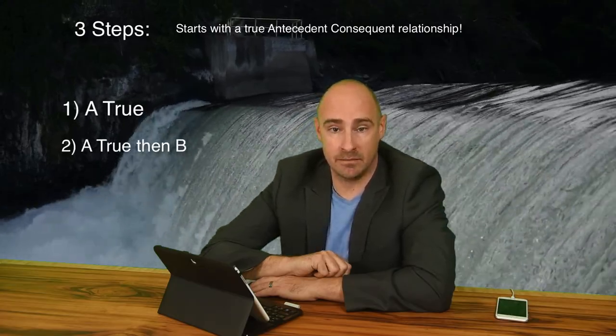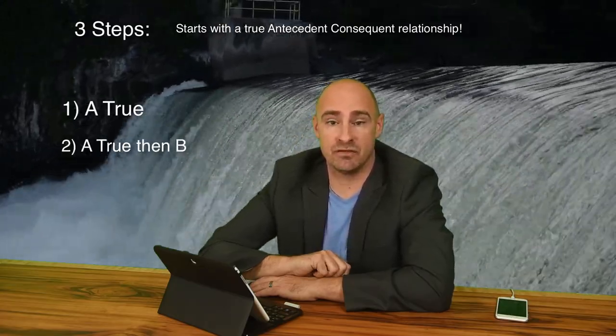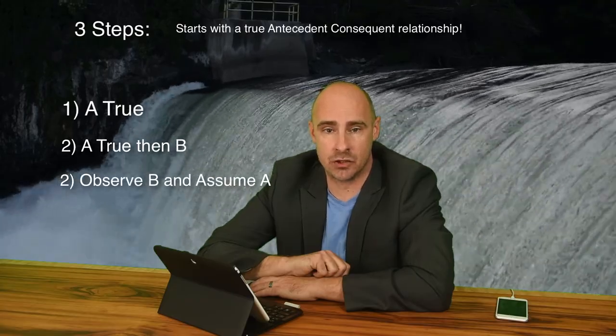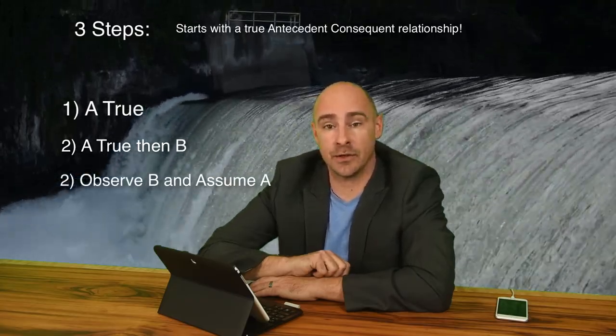Affirming the consequent is simple. It's a three-step form of reasoning that begins with a true antecedent-consequent relationship. The statement is: if A is true, then B. Affirming the consequent happens when you observe B and assume A. It is also a logical failure.